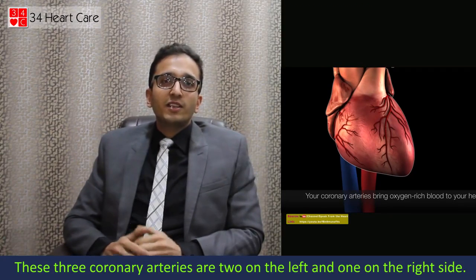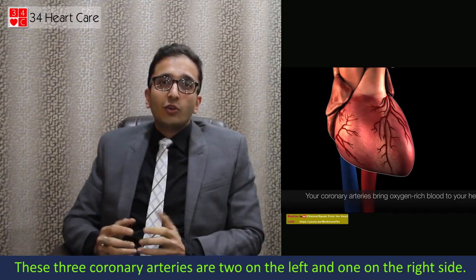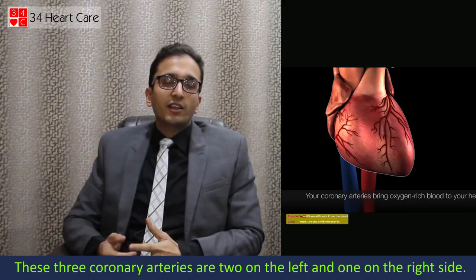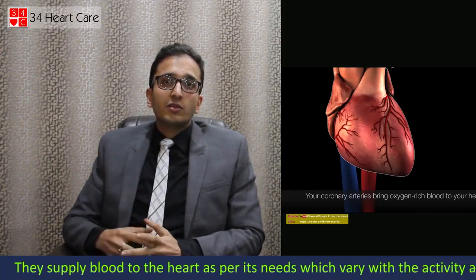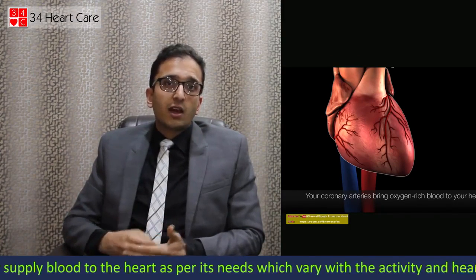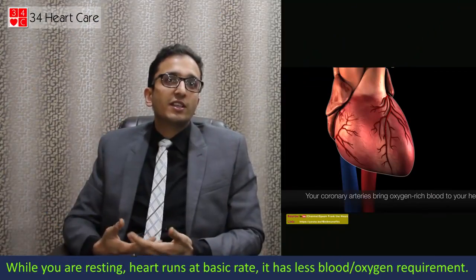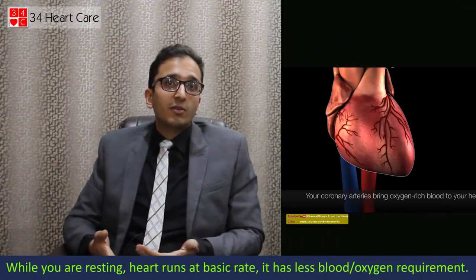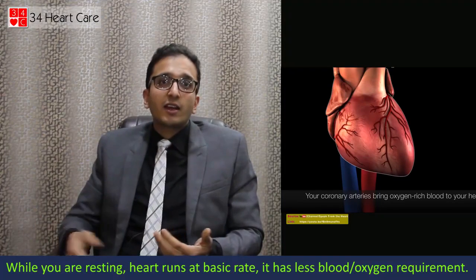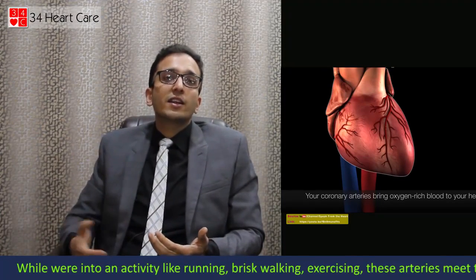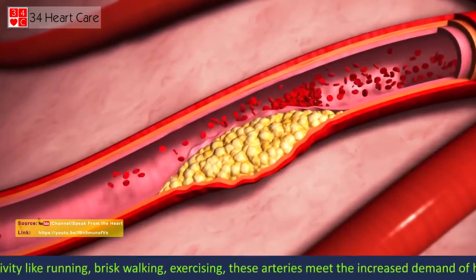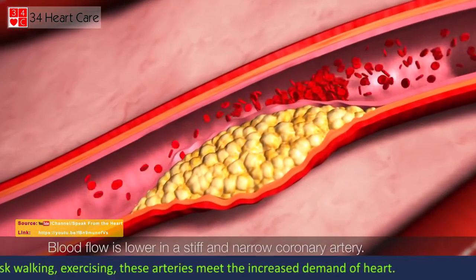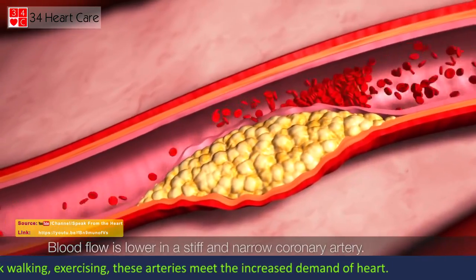These three coronary arteries are two on the left and one on the right side. They supply blood to the heart as per its needs, which vary with activity and heart rate. While you are resting, the heart runs at its basic rate and has less blood oxygen requirements. While we're into an activity like running, brisk walking, or exercising, these arteries meet the increased demand of the heart.